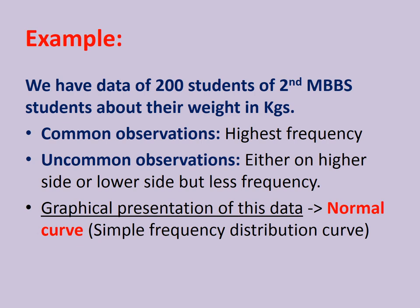Consider data on the weights of 200 students. Most common observations — the highest frequency — will be weights between 50 kg and 70–80 kg, while uncommon observations will be below 40 kg or above 80–90 kg, with lower frequency at the extremes. Plotting this data gives a normal curve, which is also called a simple frequency distribution curve.